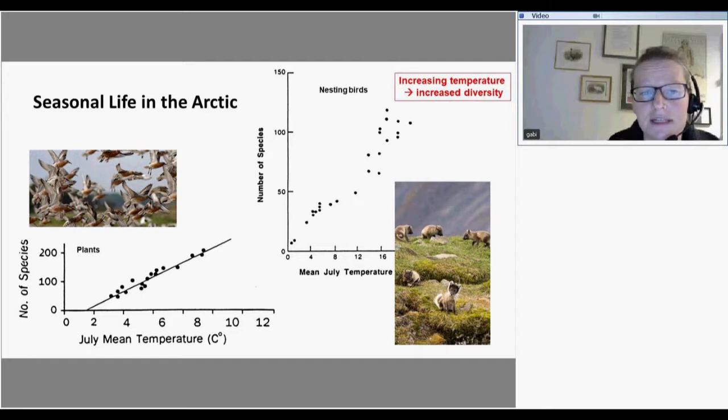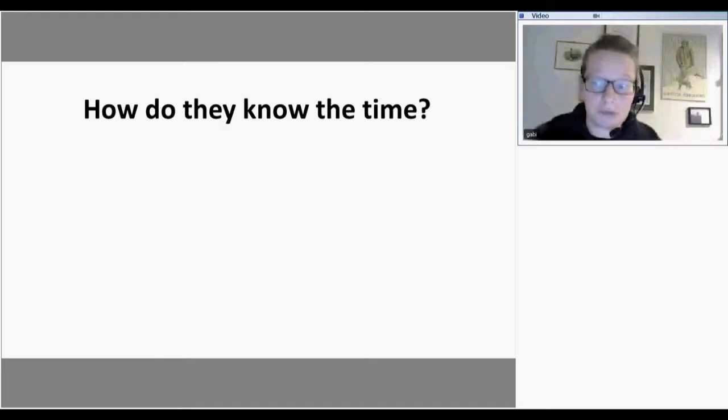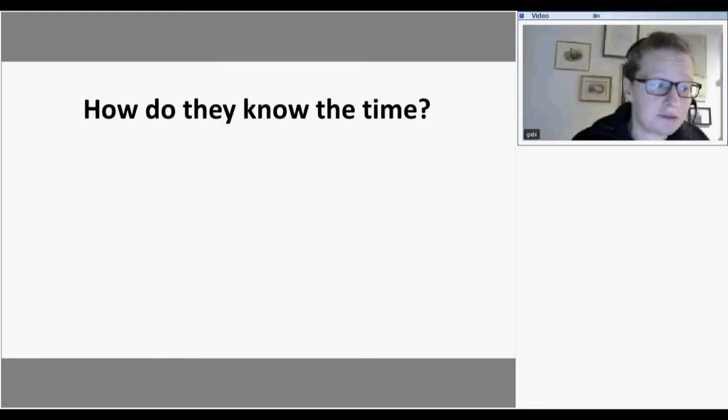In the Arctic summer we have increasing temperature and that increases not just the diversity of plants and animals but also the plain numbers. How do they know when it's time to go to the Arctic? A lot of them are on the other side of the world in Africa and of course have no idea how warm it is in the Arctic at the moment.